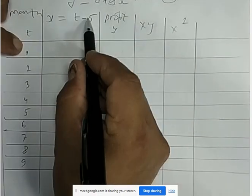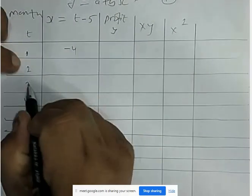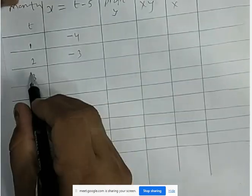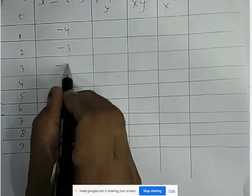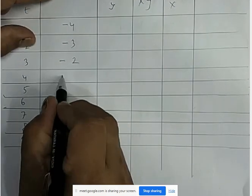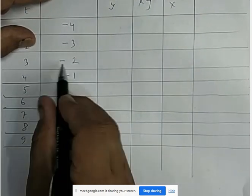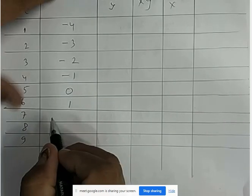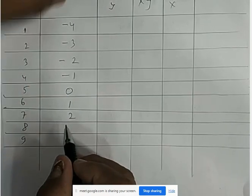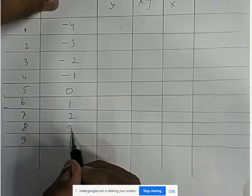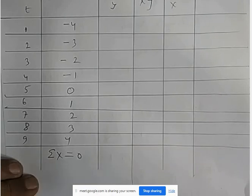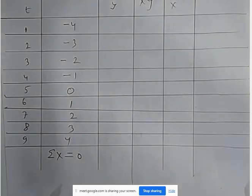Now computing x = t minus 5: 1 minus 5 is minus 4; 2 minus 5 is minus 3; 3 minus 5 is minus 2; 4 minus 5 is minus 1; 5 minus 5 is 0; 6 minus 5 is 1; 7 minus 5 is 2; 8 minus 5 is 3; 9 minus 5 is 4. Here 0 is our origin.